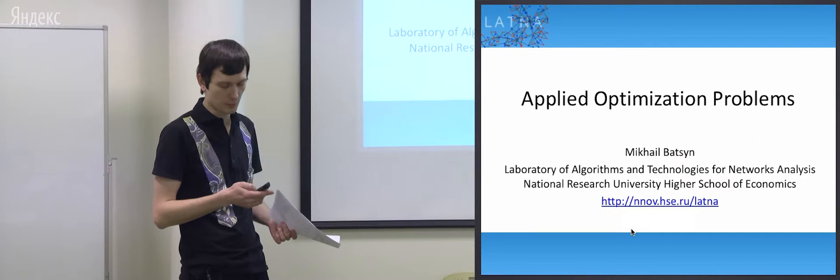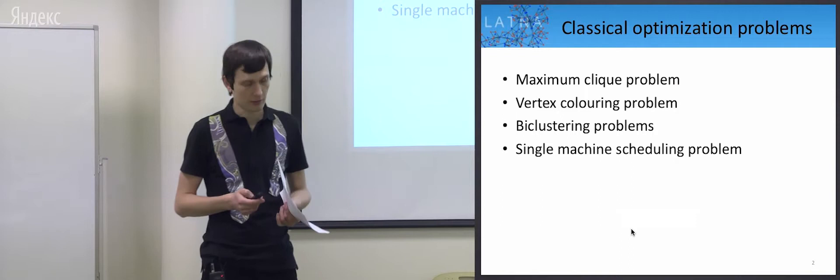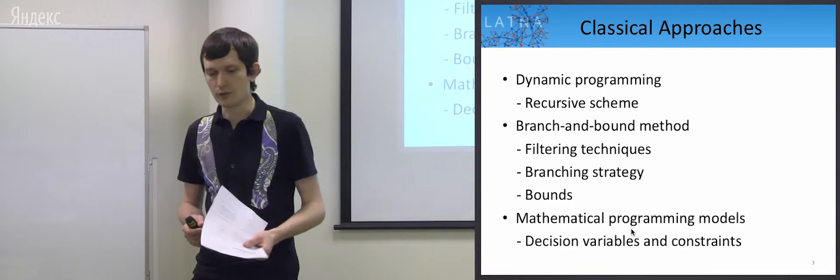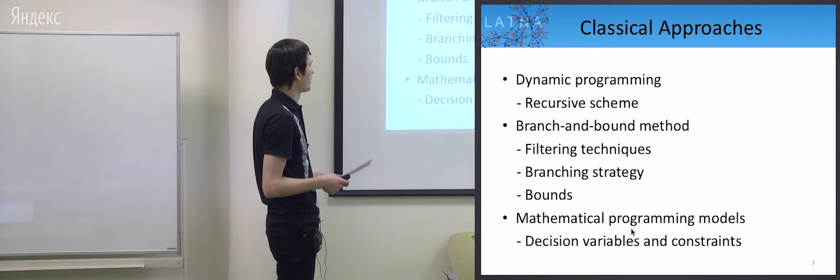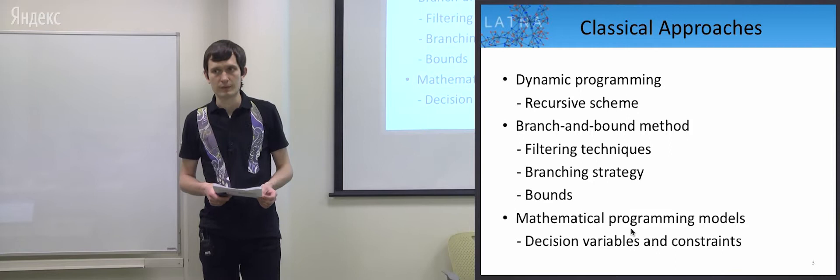First I will speak about classical optimization problems, which are usually solved by exact algorithms: the maximum clique problem, vertex coloring problem, b-clustering problem, and single machine scheduling problems. The classical approaches we use are dynamic programming and branch-and-bound methods, and also mathematical models, which are usually solved with general-purpose solvers like CPLEX or Gurobi.